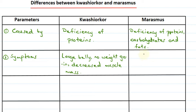In Marasmus, the symptoms include hair loss and dry, scaly skin. These are the common symptoms that occur in Marasmus.